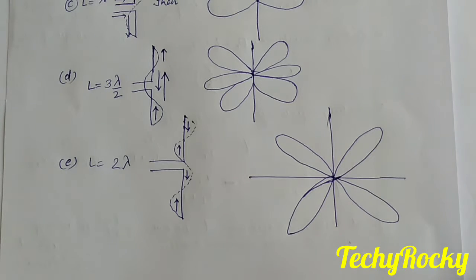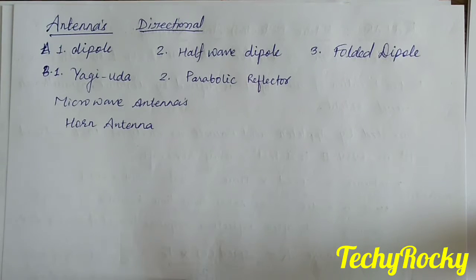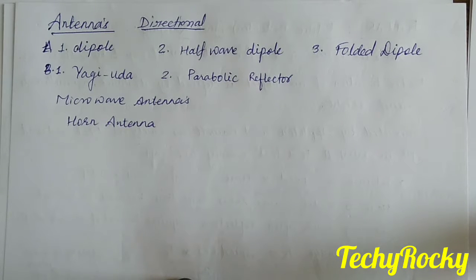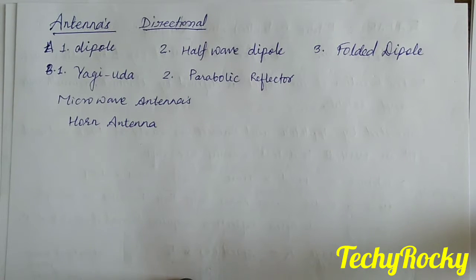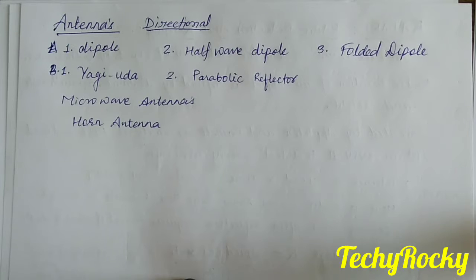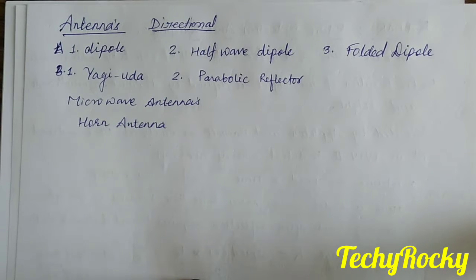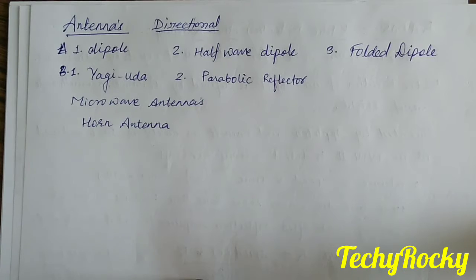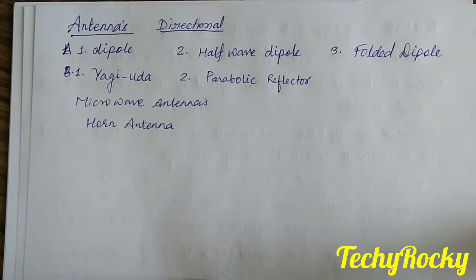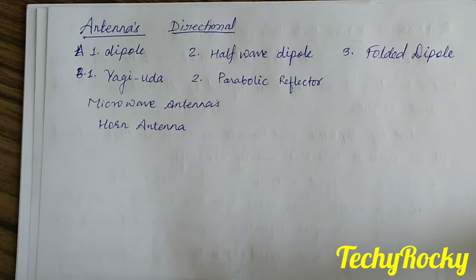There are many types of antennas: dipole, half-wave dipole, folded dipole, Yagi-Uda, parabolic reflector, and horn antenna, which falls under the microwave antenna category. Microwave antennas work in the microwave frequency range, or gigahertz range, and require special transmitters and modulators, which will be discussed later.